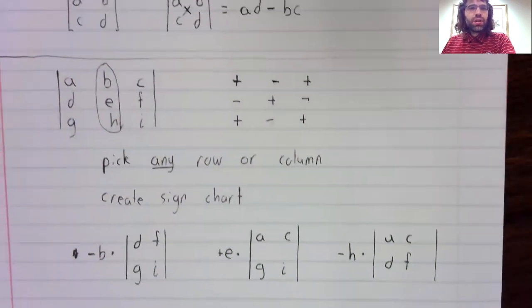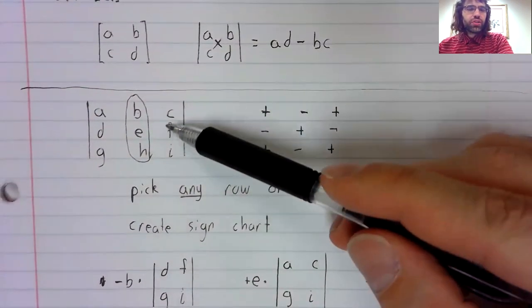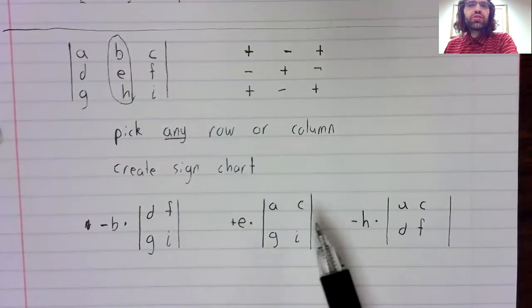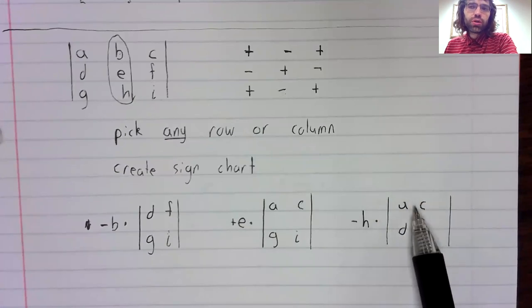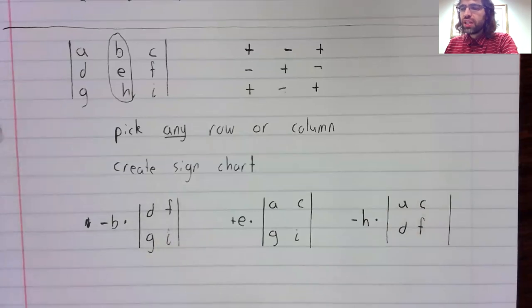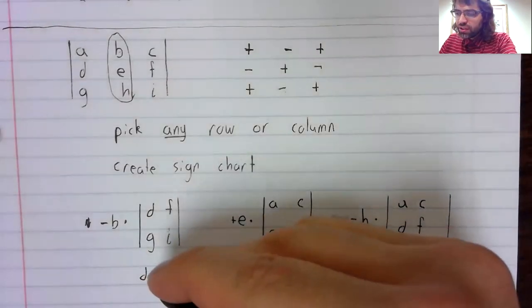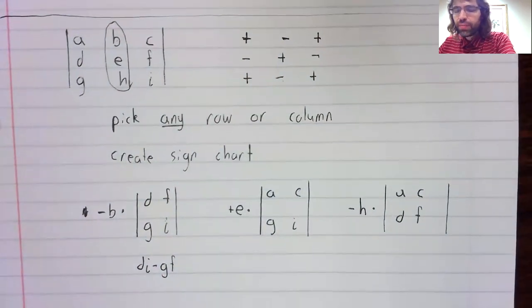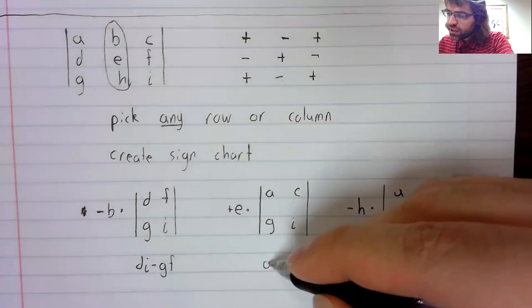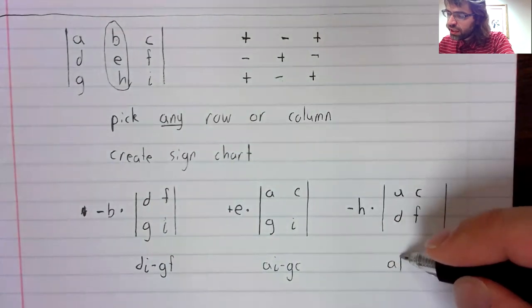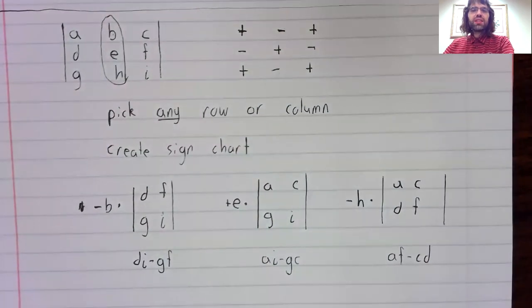And now, this determinant is defined in terms of these two by two determinants. Well, these two by two determinants, we know. This is d i minus g f. This is a i minus g c. This is a f minus c d.